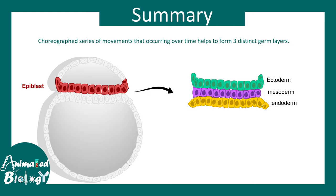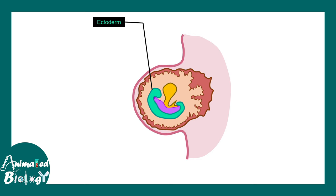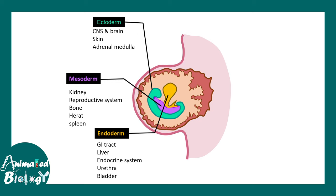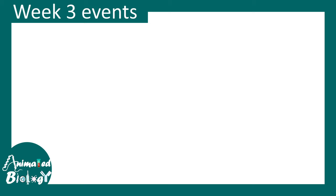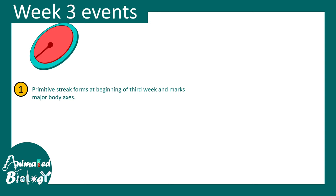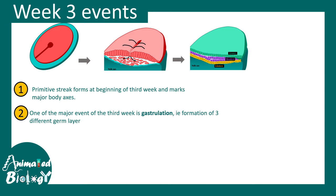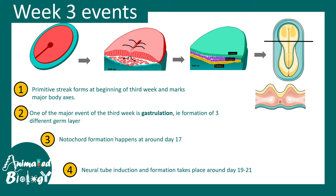These germ layers give rise to several regions: ectoderm gives rise to CNS, brain, skin, and adrenal medulla; mesoderm gives rise to kidney, bone, heart, spleen, etc.; endoderm gives rise to GI tract, endocrine system, bladder, urethra, etc. To recap: the primitive streak defines the beginning of the third week and marks the major body axis; gastrulation forms three germ layers; at the end of day 16 and transition to day 17, the notochordal process starts to form; by end of day 17, the notochord is formed; and neural tube induction happens between day 19 and day 21, ending the third week of embryonic development.